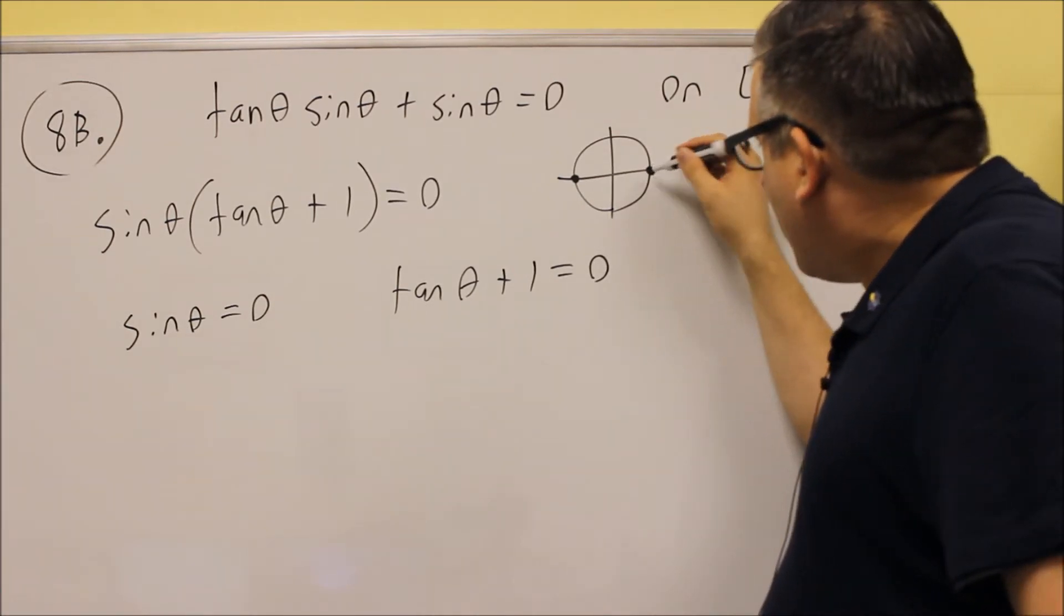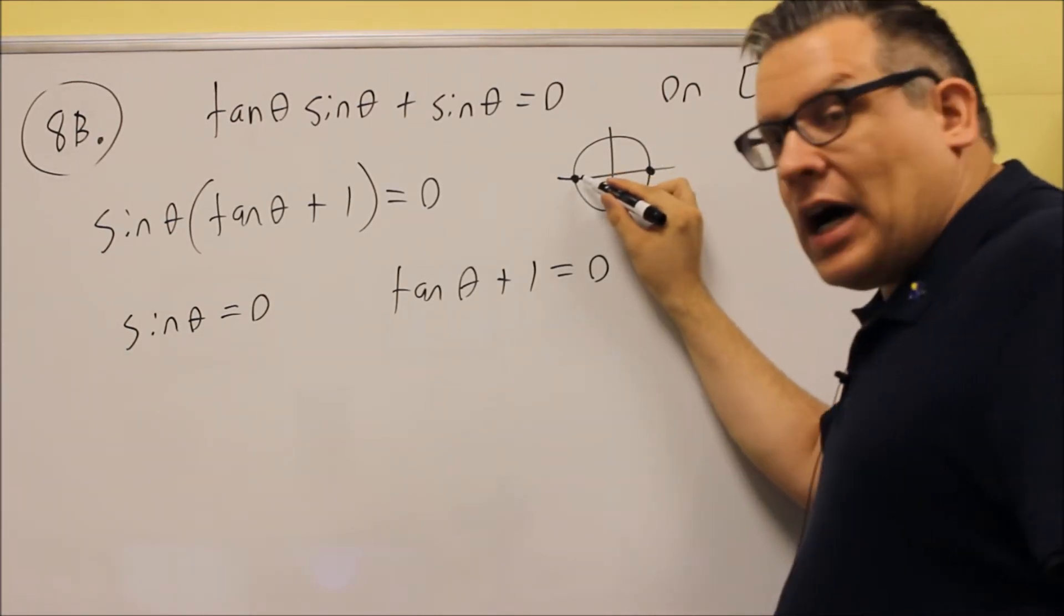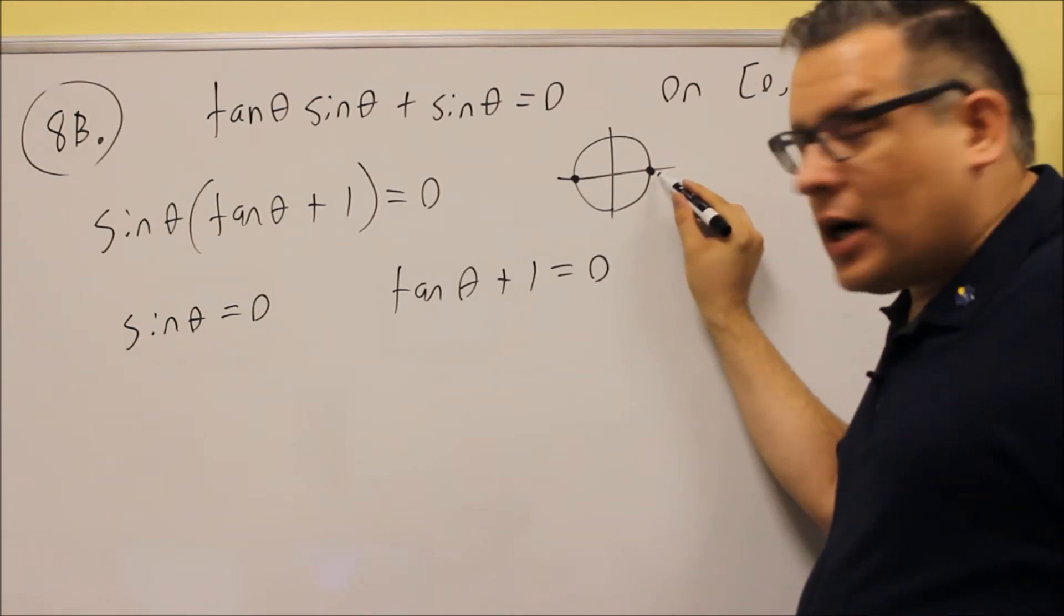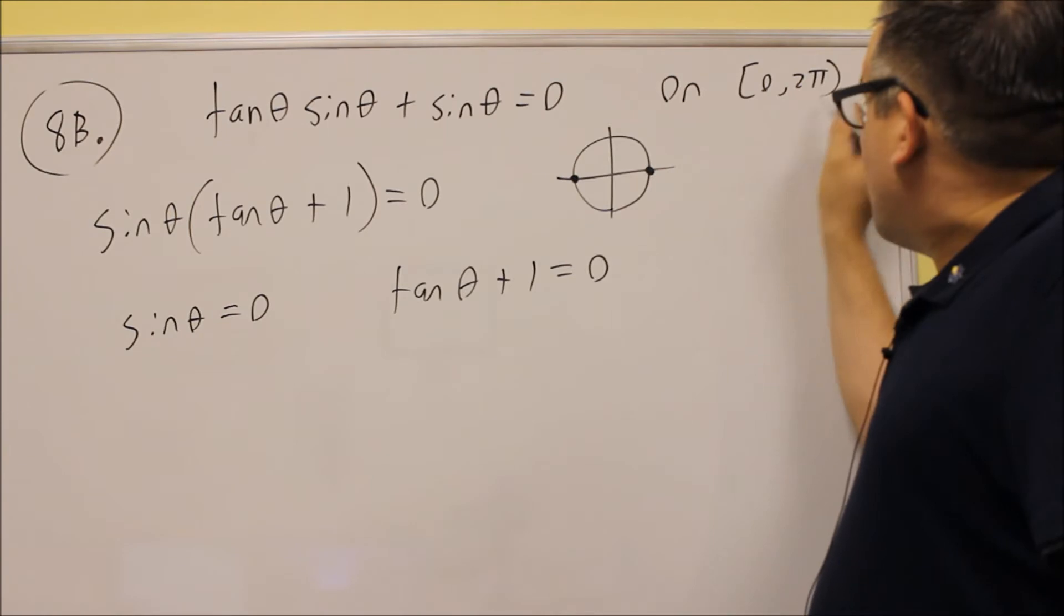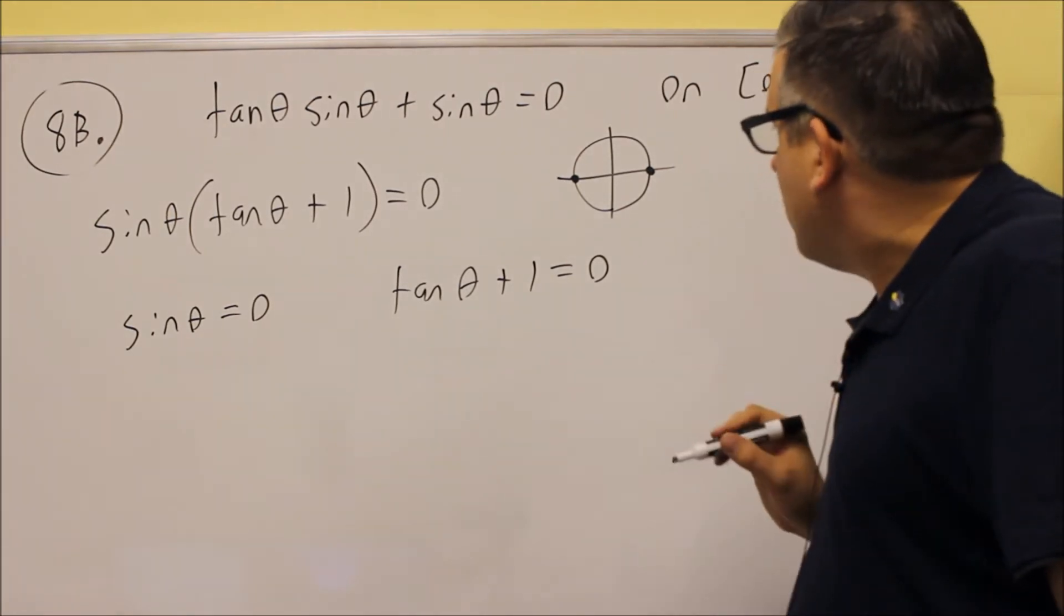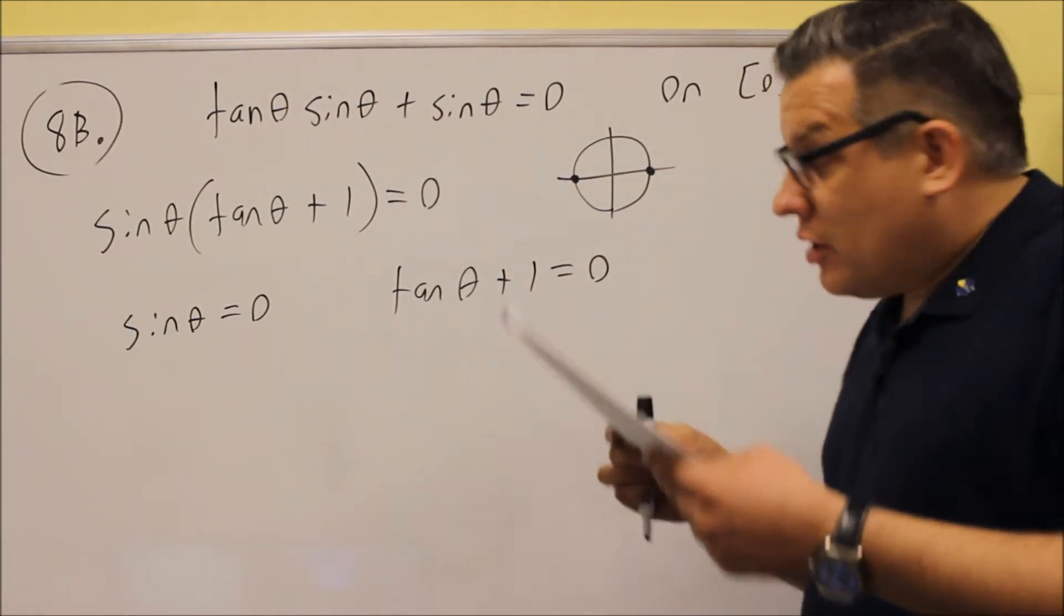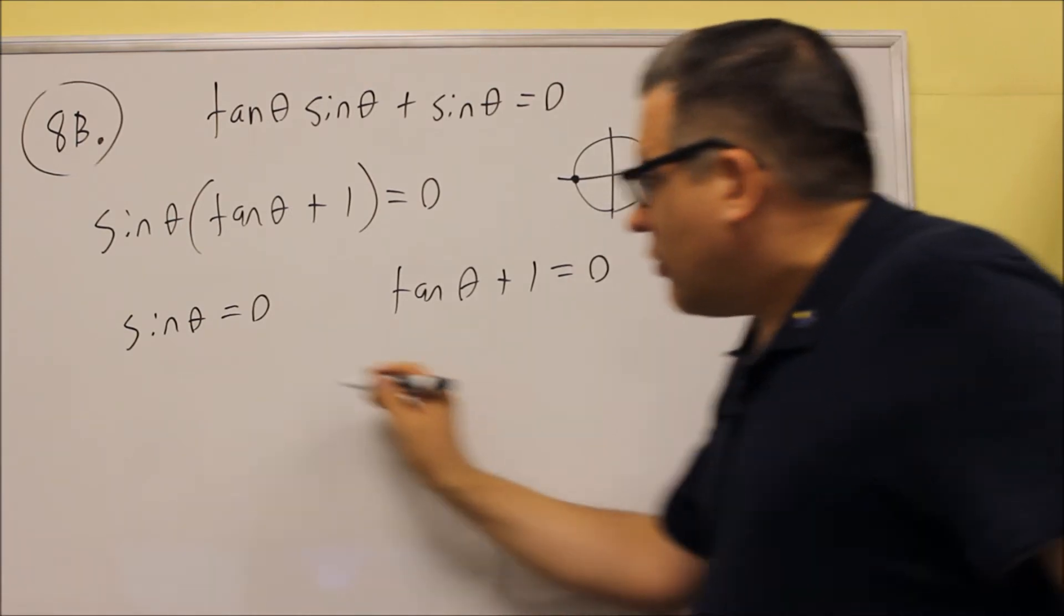It's going to happen at 0 degrees and pi. Now, technically, we go back to 2 pi, but our interval does not have 2 pi included. There's a parenthesis on that. So, because it's not included, that means our answers are just going to be, for the first one,